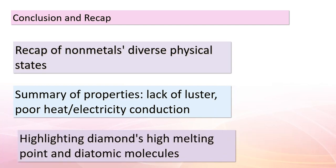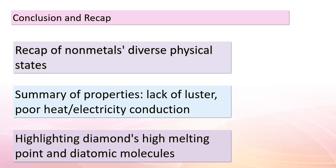As we wrap up our exploration of non-metals, let's recap what we've learned. We've delved into the remarkable variety of physical states that non-metals can exhibit — from solids like diamond and sulfur to diatomic gases such as hydrogen, nitrogen, and oxygen. We've observed their distinctive characteristics including the absence of luster and their limitations as heat and electricity conductors. We've also noted diamond's exceptional melting point and that non-metals like bromine can exist as a liquid while iodine can take on the form of a volatile solid.